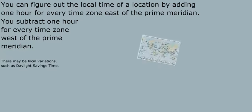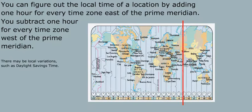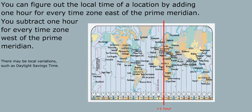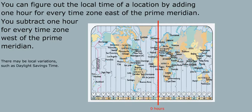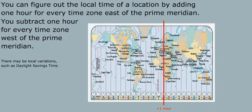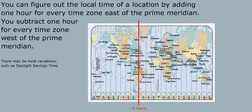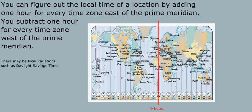You can figure out the local time of a location by adding one hour for every time zone east of the prime meridian. You subtract one hour for every time zone west of the prime meridian. There may be local variations such as daylight savings time.